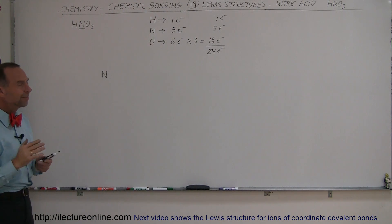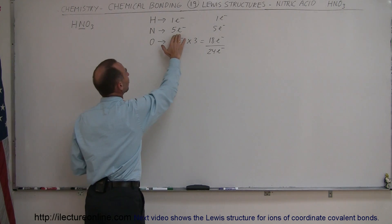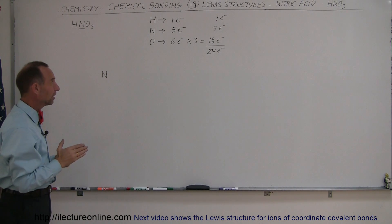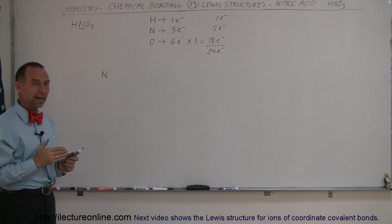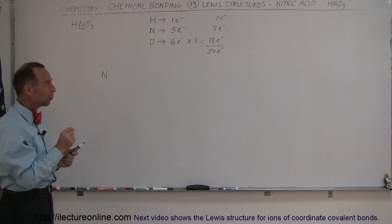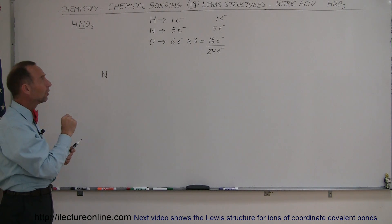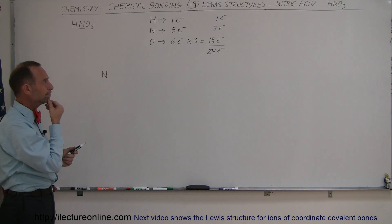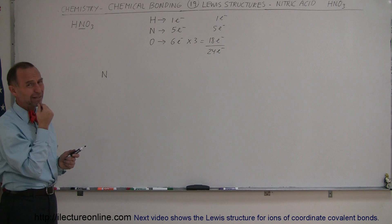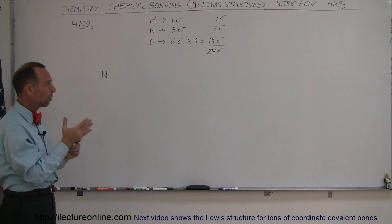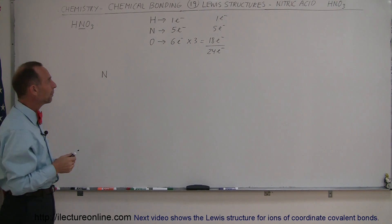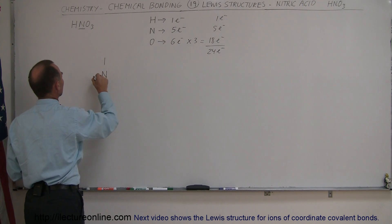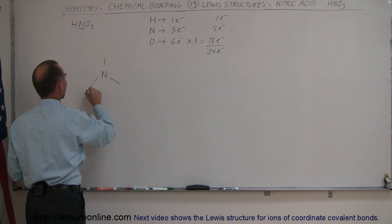Where are the oxygens going to be and where is the hydrogen going to be? Since nitrogen has five valence electrons and would like to have eight, it's looking to make three bonds. There are three oxygen atoms, and those oxygen atoms want to have at least one bond so they can come up with enough valence electrons — though oxygen likes to have two bonds. So let's start out with one bond for each oxygen.